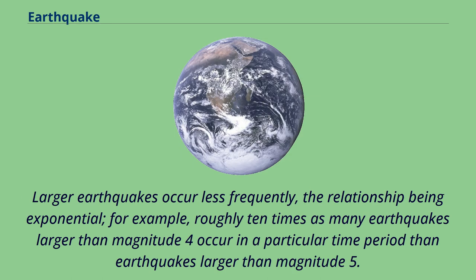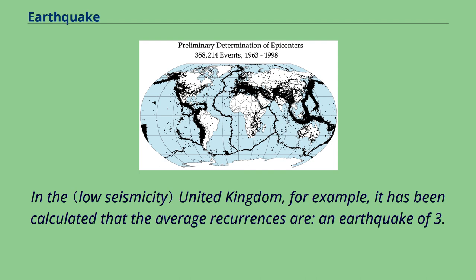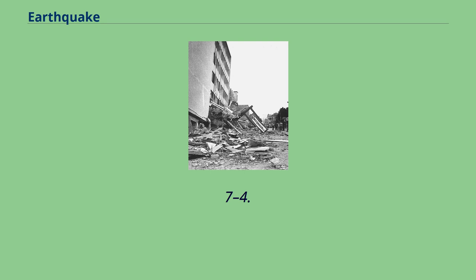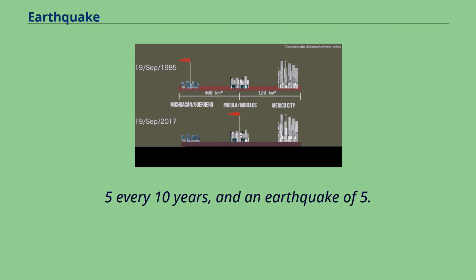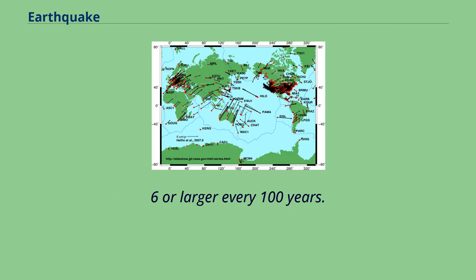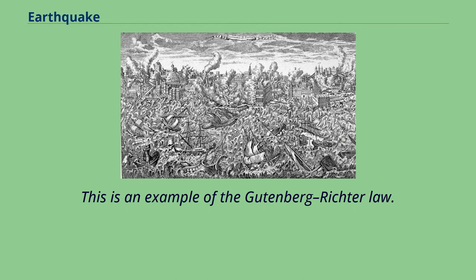Larger earthquakes occur less frequently, the relationship being exponential — roughly 10 times as many earthquakes larger than magnitude 4 occur in a particular time period than earthquakes larger than magnitude 5. In the United Kingdom, for example, the average recurrences are: an earthquake of 3.7 to 4.6 every year, an earthquake of 4.7 to 5.5 every 10 years, and an earthquake of 5.6 or larger every 100 years. This is an example of the Gutenberg-Richter law.